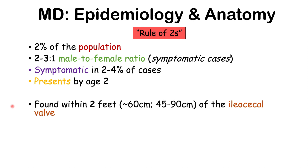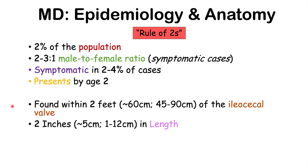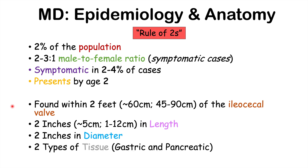The Meckel's diverticulum is often found within two feet (60 centimeters, range 45–90 cm) of the ileocecal valve. It is most often around two inches (about five centimeters) in length, ranging from one to twelve centimeters — and the longer it gets, the more problematic it becomes. The diameter is often two inches (about five centimeters). There are also two types of ectopic tissue: gastric and pancreatic tissue within the diverticulum.